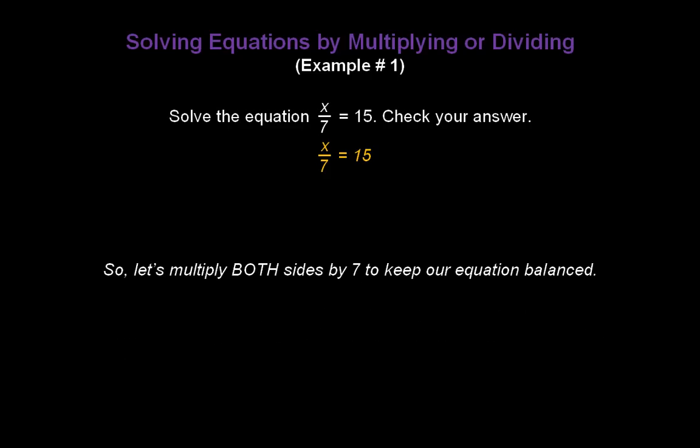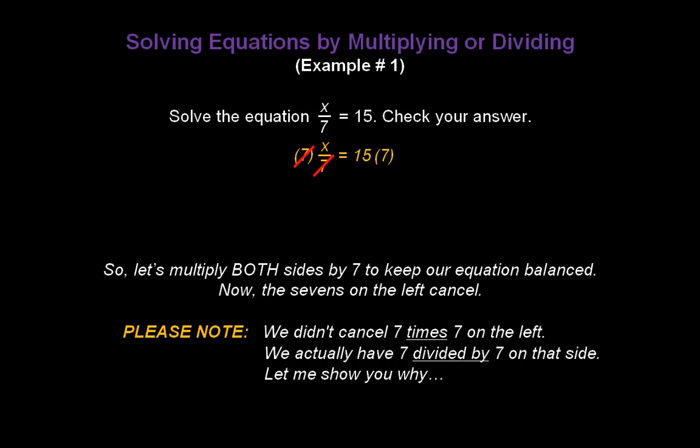So let's multiply both sides now by 7. We have to multiply both sides to keep our equation balanced. So I'll write times 7 on the left and multiply the 15 by 7 on the right. Now, the 7s on the left cancel out. Now, it may not look like it because it may look like we're multiplying them. But please note, we didn't cancel 7 times 7 on the left. We actually have 7 divided by 7 on that side. And let me show you why. Let's write this a different way.